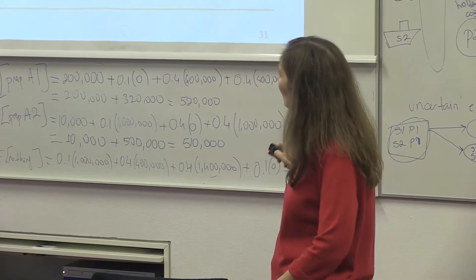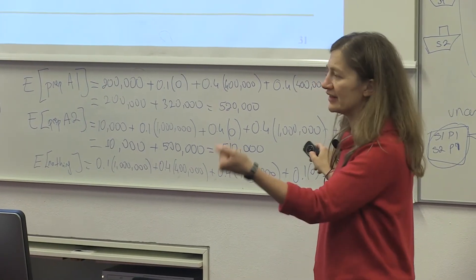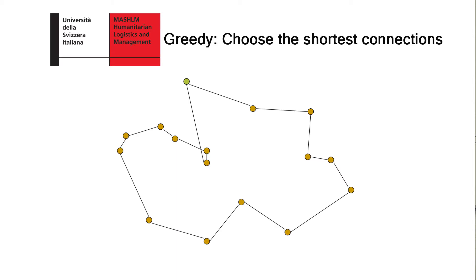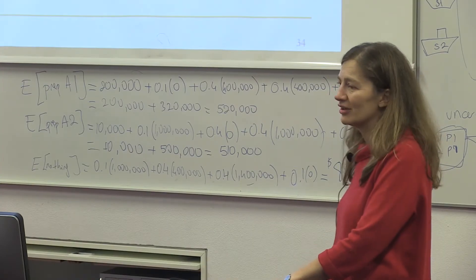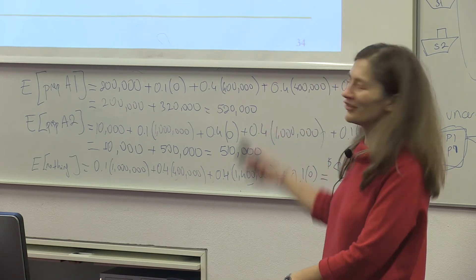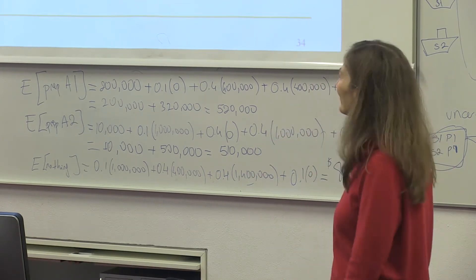Here's another one. In this one, instead of going to the nearest one, you just pick the shortest links first. So this was the shortest, then I pick this one, and if I keep doing this I would get to something like this. Looks like a much better solution. Still there's a cross, but very easy to fix that one.